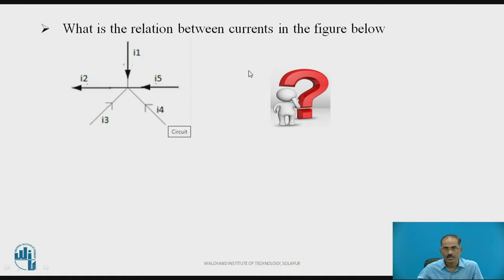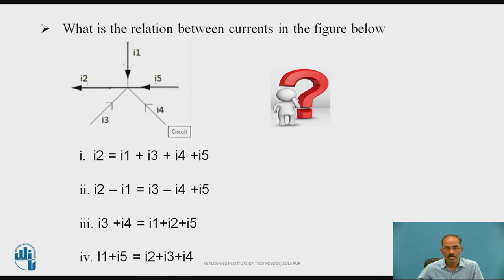What is the relation between currents in the figure below? We can see this circuit diagram having a single node and there are 5 currents I1, I2, I3, I4 and I5 are either entered to this node or leaving to this node. So, I2 is leaving this node. We need to find the relationship between the various currents. The options are, first one I2 equal to I1 plus I3 plus I4 plus I5. Second one I2 minus I1 equal to I3 minus I4 plus I5. Third one I3 plus I4 equal to I1 plus I2 plus I5. Fourth one I1 plus I5 equal to I2 plus I3 plus I4. Pause the video and try to think and find the answer.